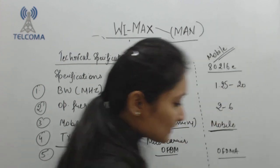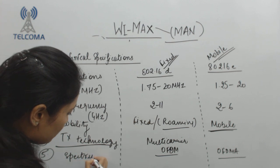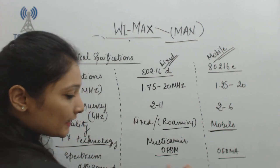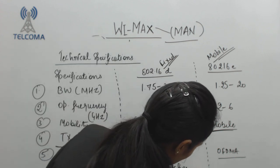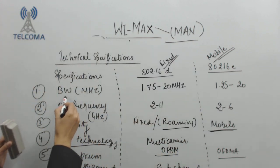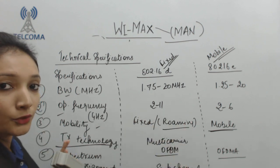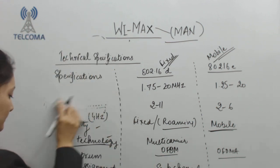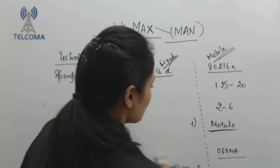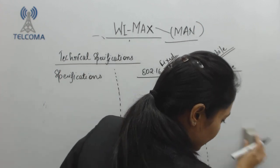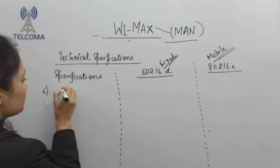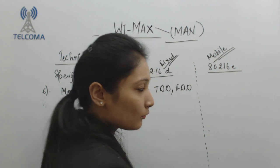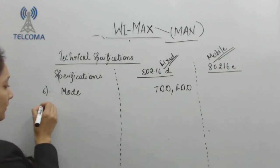Another specification is the spectrum assignment unit, which is the sub-channelization unit. WiMAX supports both TDD (Time Division Duplexing) and FDD (Frequency Division Duplexing) modes.